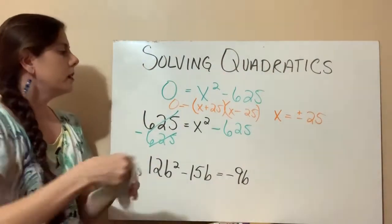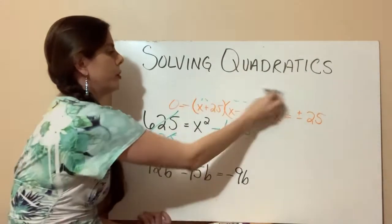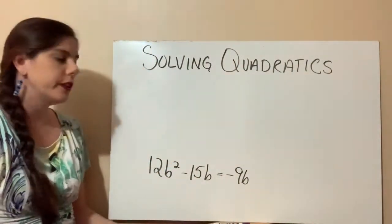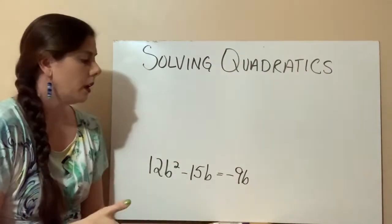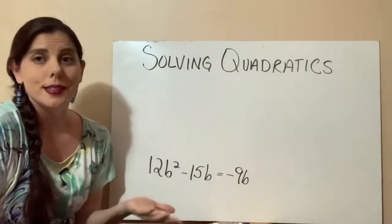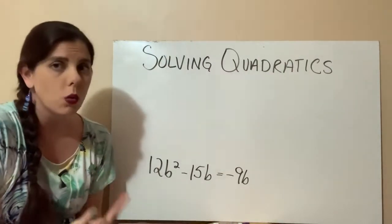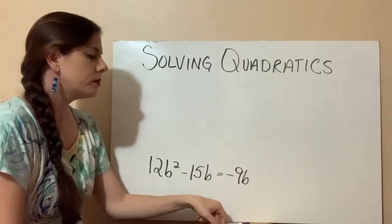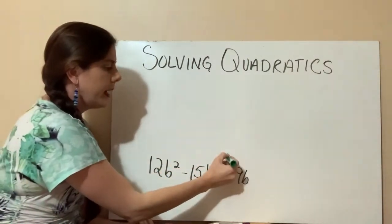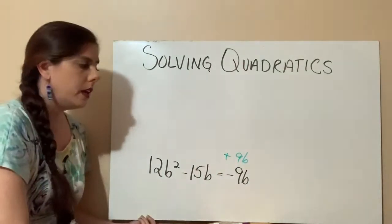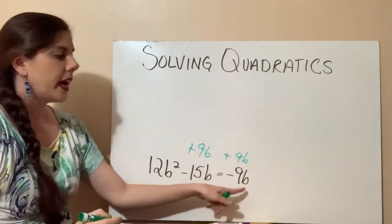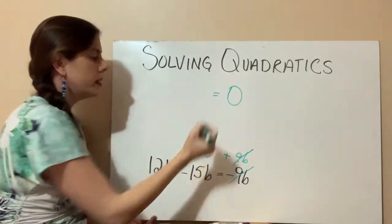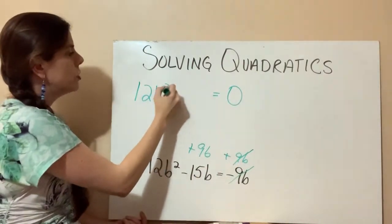All right, so the last problem that we have, and again, I'm going to go ahead and erase so that we have some room to work. And our last problem is 12b squared minus 15b equals negative 9b. So again, the first thing that I recognize on this one is it's not set to 0 yet. So we need to use our properties of equality to get all the terms on one side and 0 on the other. We want it set to 0. So what I'm going to do is I'm going to have to add 9b to both sides. So if I add 9b to a negative 9b, that would equal 0. So now we're going to have 0 on the one side.